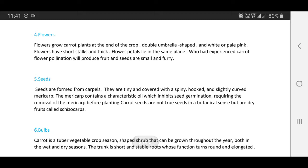Now seeds. Seeds are formed from carpels. They are tiny and covered with a spiny, hooked and slightly curved mericarp. The mericarp contains a characteristic oil which inhibits seed germination, requiring the removal of the mericarp before planting. Carrot seeds are not true seeds in a botanical sense, but are dry fruits called schizocarps.